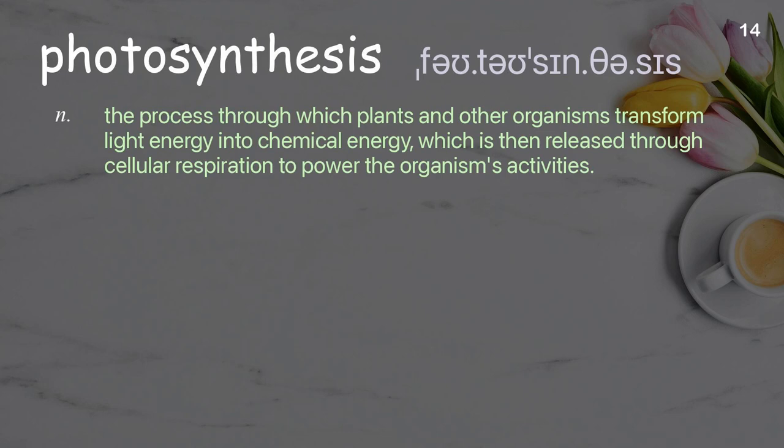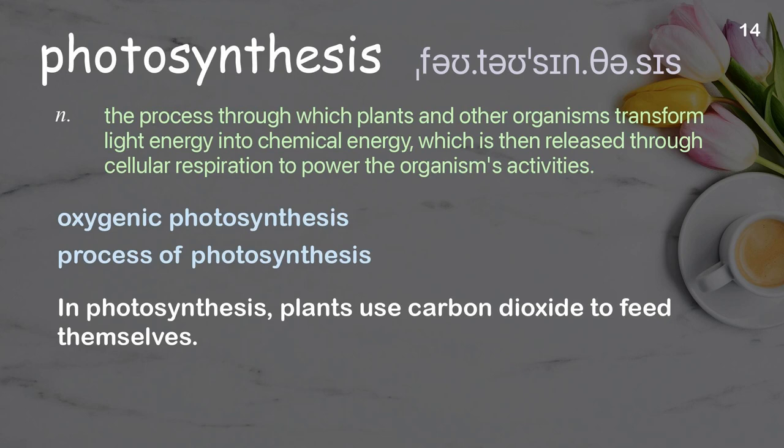Photosynthesis. The process through which plants and other organisms transform light energy into chemical energy, which is then released through cellular respiration to power the organism's activities. Examples: oxygenic photosynthesis, process of photosynthesis. In photosynthesis, plants use carbon dioxide to feed themselves.